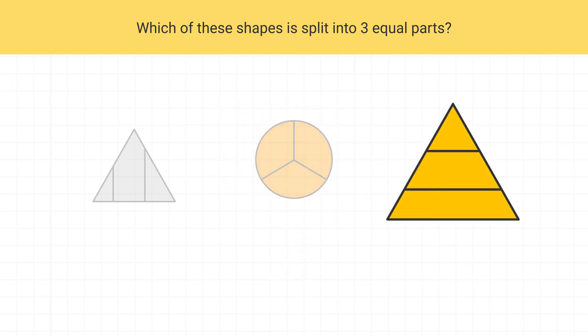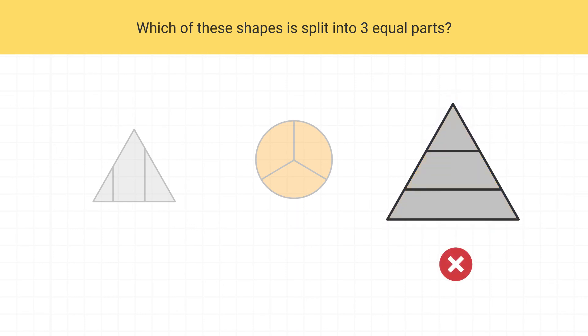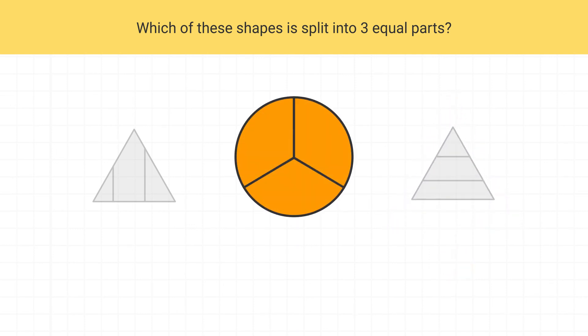The last shape is also split into three parts, but the parts are not the same size. The part on the bottom is bigger, medium in the middle, and small on top. This shape is not split into equal parts. So only this shape is split into three equal parts.